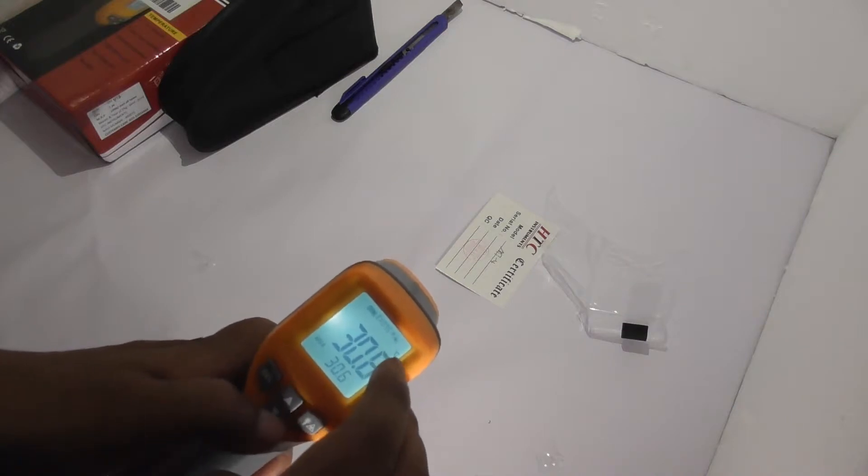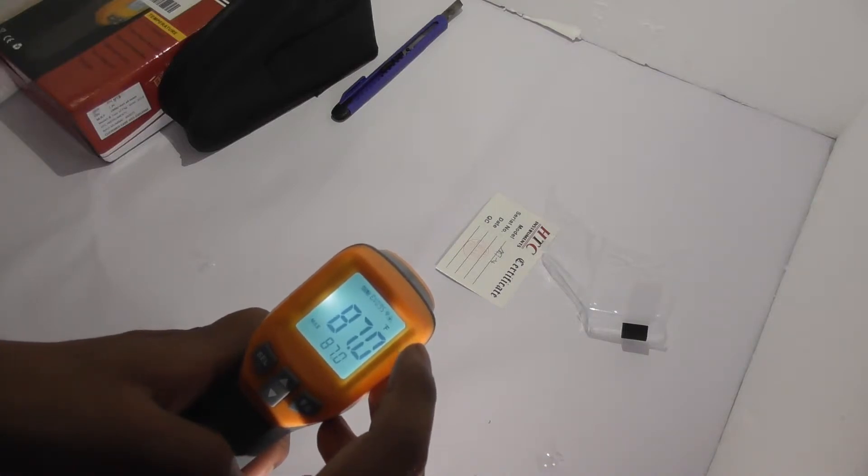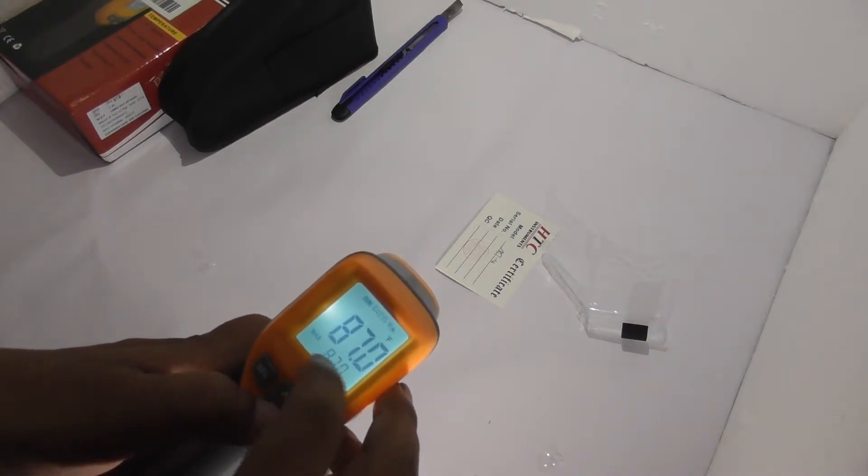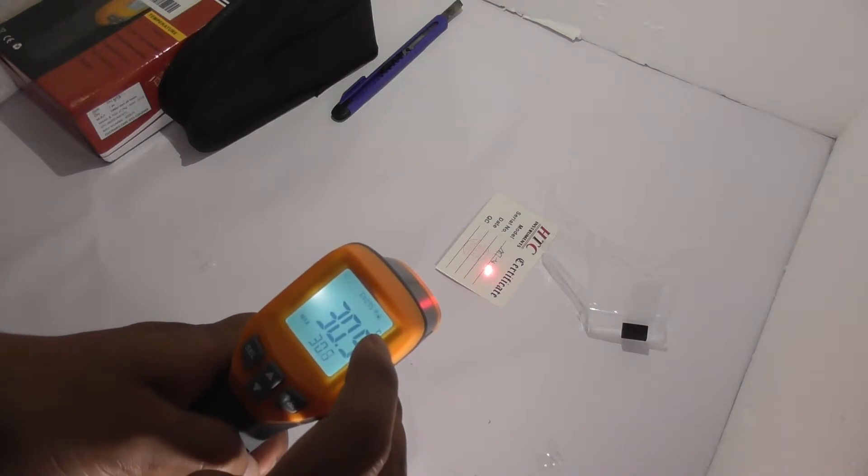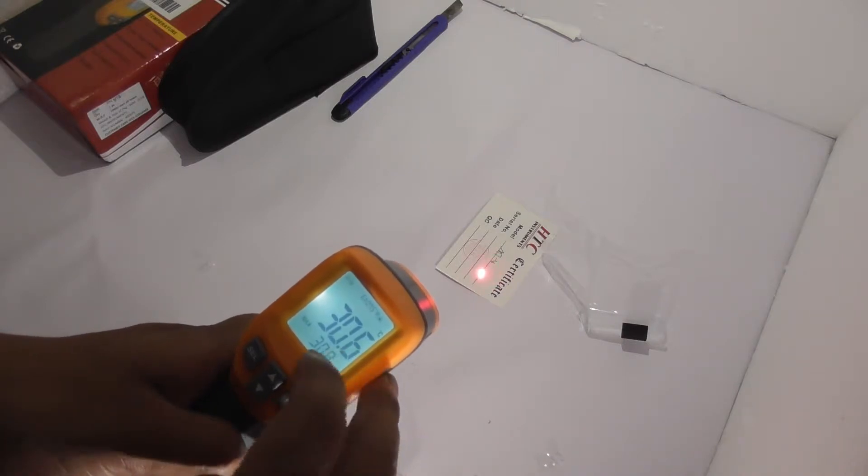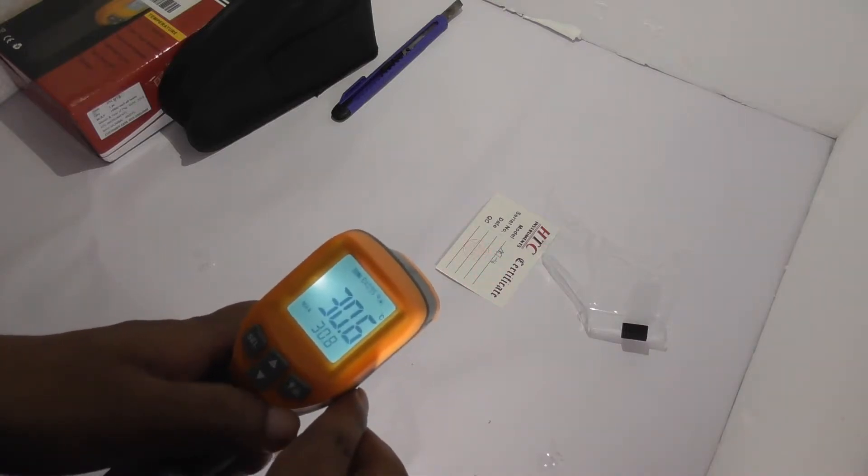You can change between Fahrenheit or Celsius by pressing up and down. It shows the current temperature. The maximum temperature will be shown here, and the current temperature will be shown here. As I've just triggered, it's showing the current temperature of that page.